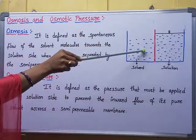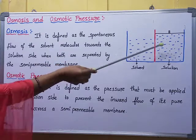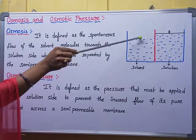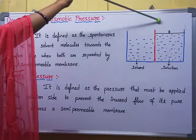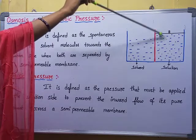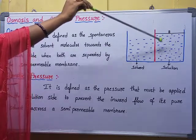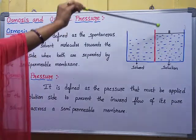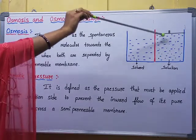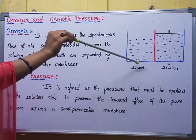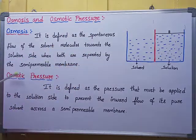Osmotic pressure is the pressure applied on the solution side in order to stop the flow of solvent molecules from one side to the other. We know the solvent level decreases and solution level increases during osmosis. When we apply pressure from the top of the solution side, the solution level decreases and won't increase further, while the solvent level increases again because we are stopping the process. This pressure applied on the solution side to stop the flow of solvent through the semipermeable membrane is called osmotic pressure.